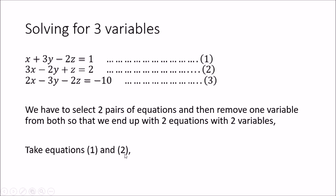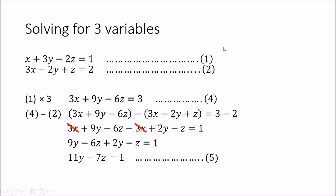First, we take equations 1 and 2 and eliminate x. We multiply equation 1 by 3, giving 3x + 9y - 6z = 3. The coefficient of x in both this new equation (equation 4) and equation 2 is now 3. We subtract equation 2 from equation 4, expanding to get 3x + 9y - 6z - 3x + 2y + z = 3 - 2 = 1. The x terms cancel, leaving us with equation 5: 11y - 7z = 1.